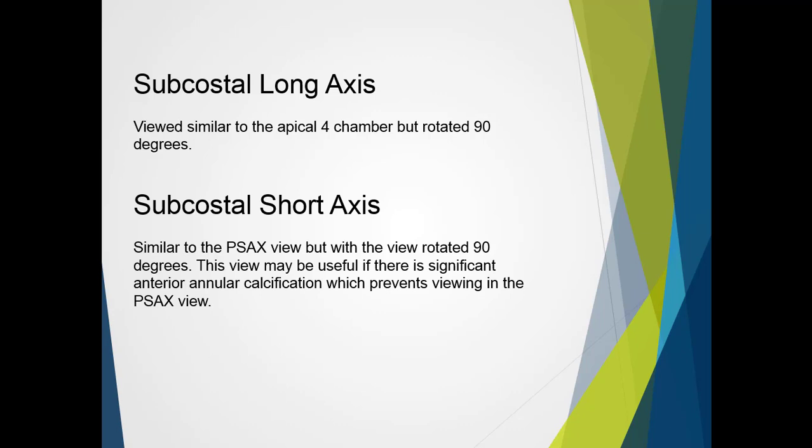The subcostal view is also used to investigate the mitral valve. We can get the subcostal four-chamber view, which is basically just like the apical four-chamber view, with everything rotated to the side so the heart lies more horizontal in the image. With careful orientation, we can also get the subcostal short axis view, similar to the parasternal short axis view. This may be useful when there is particular anterior annular calcification which prevents viewing the valve appropriately in the standard parasternal short axis window.